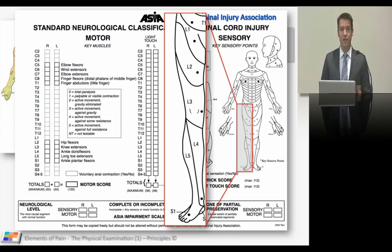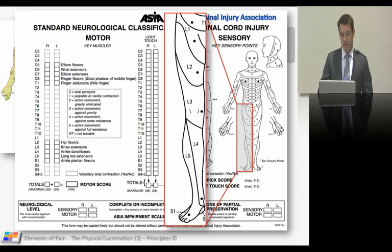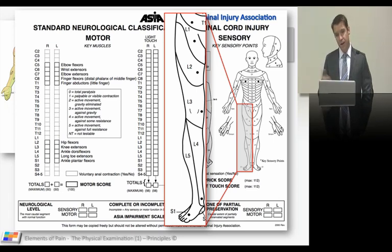For the lower limb dermatomes: L2 is above the knee, L3 is the knee, L4 is the medial aspect, L5 is the mid aspect going on to the top of the foot and the big toe, and S1 is the lateral aspect. Keep it simple.